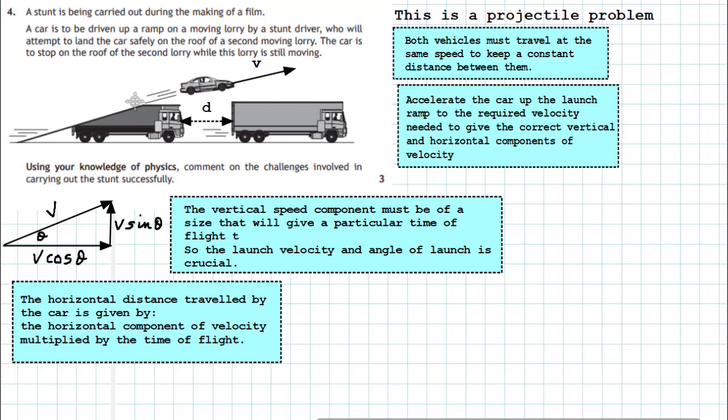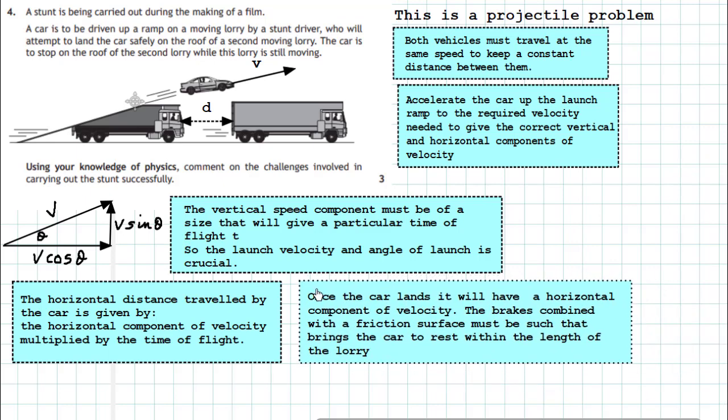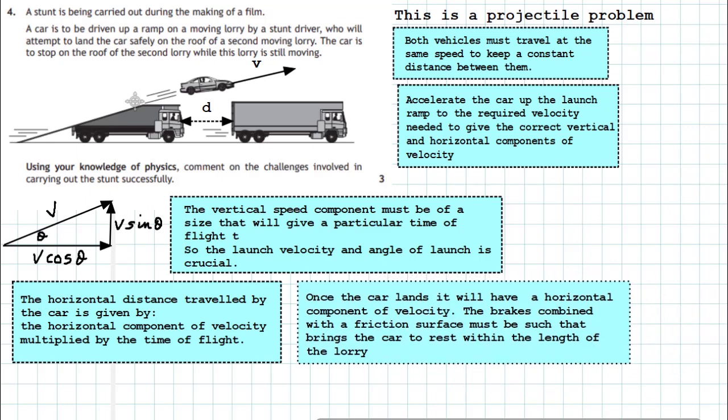But our challenges are not finished there, because once the car lands it's got to stop, and you just can't suddenly come to a stop. So once the car lands it will have a horizontal component of velocity, and the brakes combined with the friction of the surface of the second vehicle must be such that they bring the car to rest within the length of the lorry.